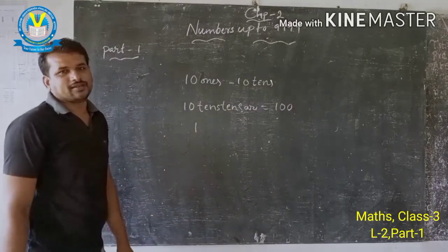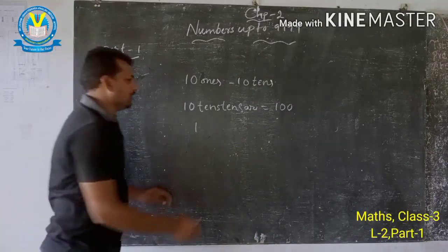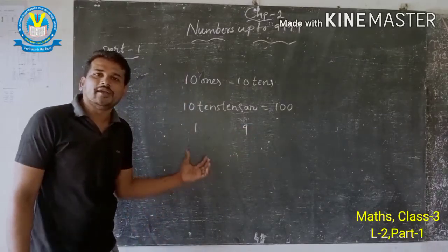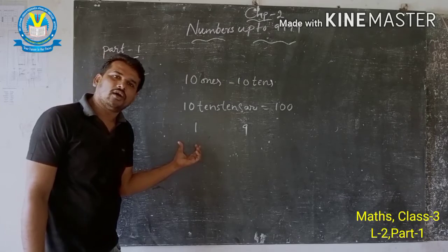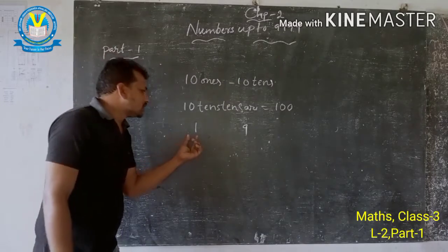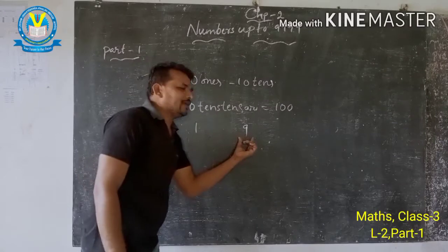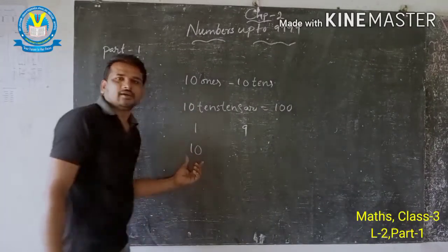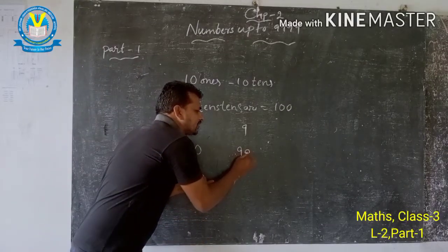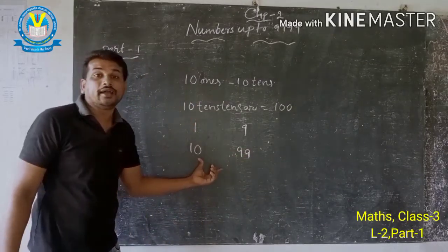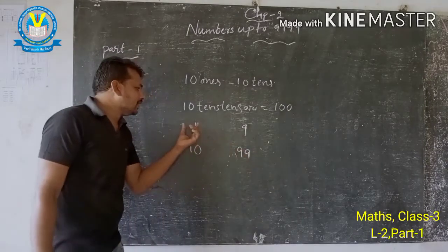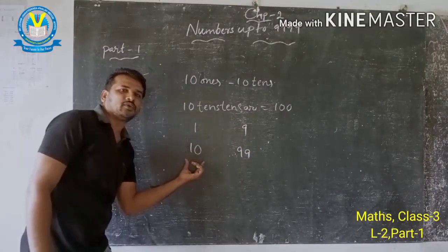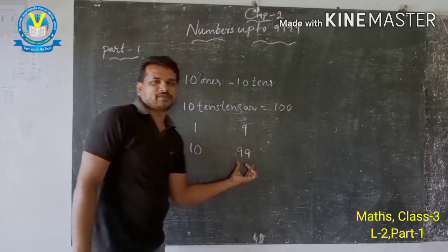1 is the smallest number and 9 is the greatest number in single digit. In double digit, 10 is the smallest number and 99 is the greatest number.